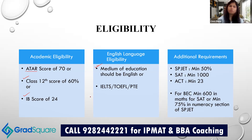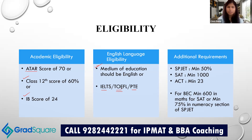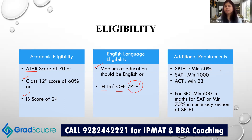Your academics should have been completed in the English language. If not, you have the option of taking IELTS, TOEFL, or PTE. For IELTS, you need a minimum score of 6.0 with no band below 5.5. For TOEFL, the overall minimum score is 60 with not less than 20 in each section. For PTE, a minimum score of 60 is required.